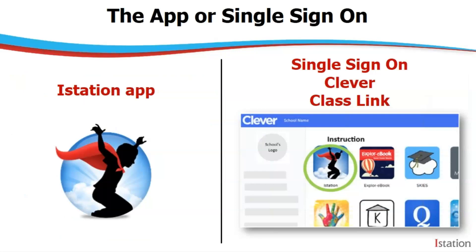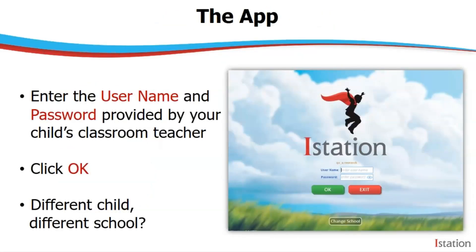Once the app is installed and if your child is using a single sign-on system, just follow the school's instructions on how to access iStation. Once logged into the single sign-on system, look for the icon. If your child is logging on directly to the app, they will be instructed to enter the username and password provided by your child's classroom teacher and then click OK. But if you have another child who is also using iStation but at a different school, click on the change school button at the bottom and change the domain.